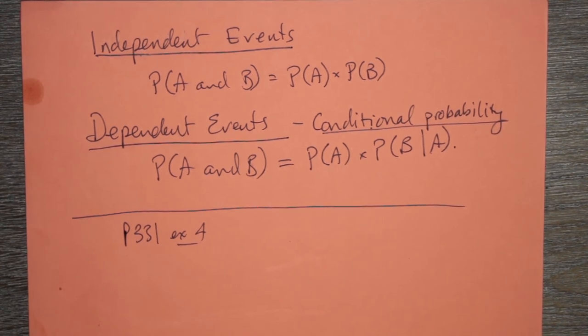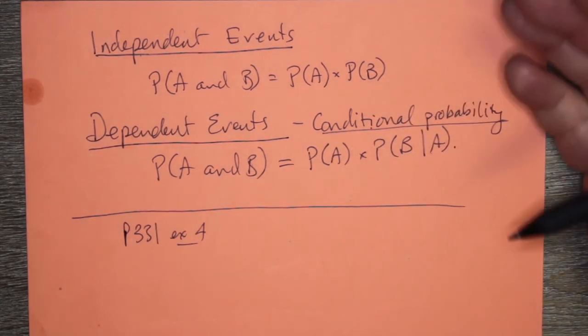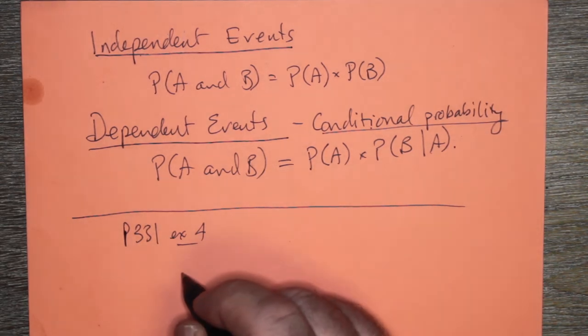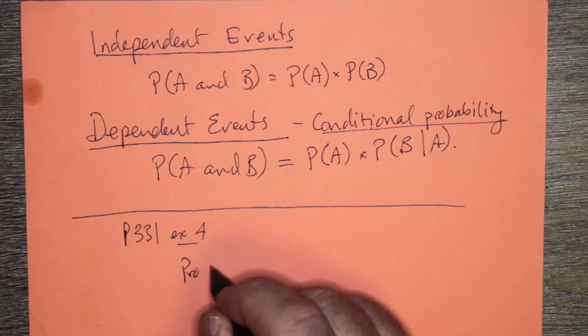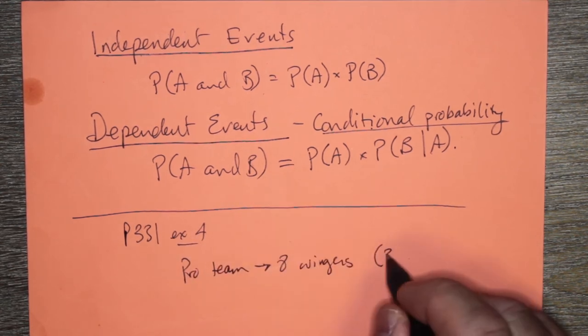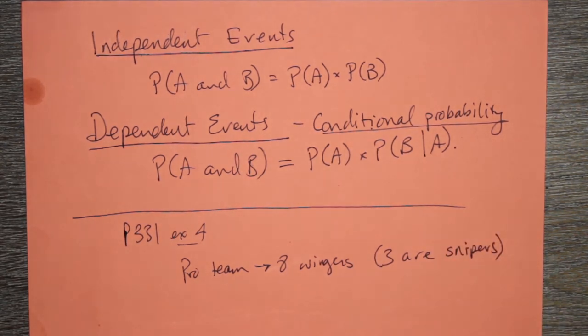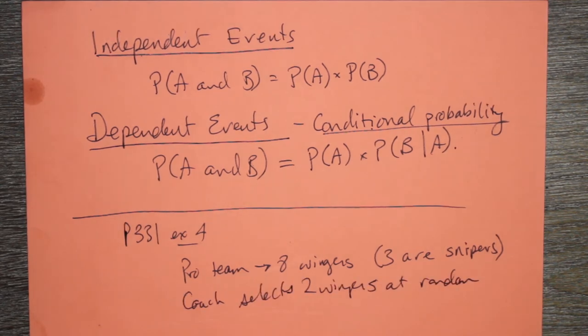It doesn't sound balanced, but maybe to make the game more interesting, the coaches agree to select two wingers at random from the pro team to play for the farm team. So that means that maybe the farm team has two people from the pro team that are at random. That kind of weakens the pro team, but strengthens the farm team. So what's the probability that two snipers will play for the farm team? The coaches agree to select two wingers at random from the pro team to play for the farm team.